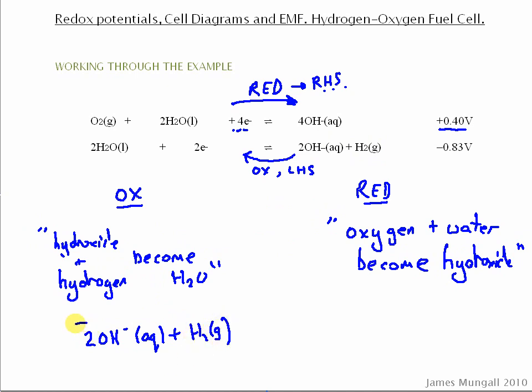So 2OH minus AQ plus H2 gas. And we put that in a square bracket, and then a comma to say that this becomes the water, so it becomes H2O. And we do include this stoichiometry. So that there will be, will make the basis of our left hand electrode.